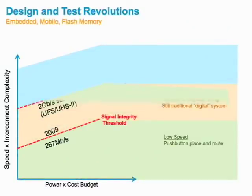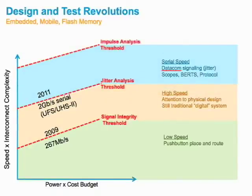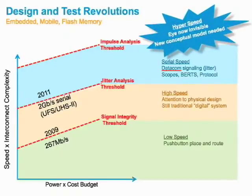At some point, you have to transition from this high-speed digital interface where single-ended signals are commonly used to what you might call serial speed, and this is the point where everything becomes differential. You have to think about your design differently. Eventually, you'll reach a speed where even the traditional serial interconnects won't suffice, and this is what I would call the hyperspeed environment. The way you actually have to specify and design interfaces like this is fundamentally different from how you would do it for a serial interface, a high-speed digital, or a low-speed design.